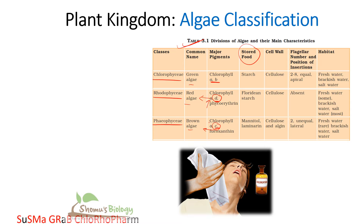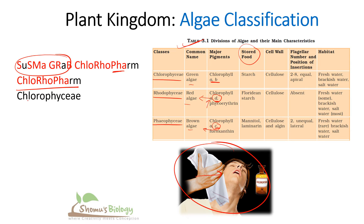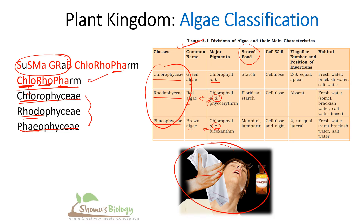The key sentence is: 'Sushma grab chloroform.' Think about chloroform and people getting fainted. 'Chloroform' starts with chloro for Chlorophyceae, then rh for Rhodophyceae, and pha for Phaeophyceae. So chloro = Chlorophyceae, rho = Rhodophyceae, and farm/pha = Phaeophyceae — the class names are done with 'chloroform.'